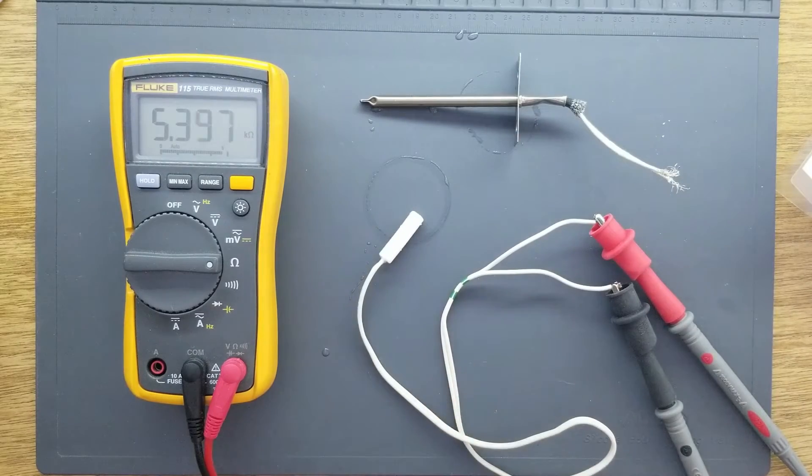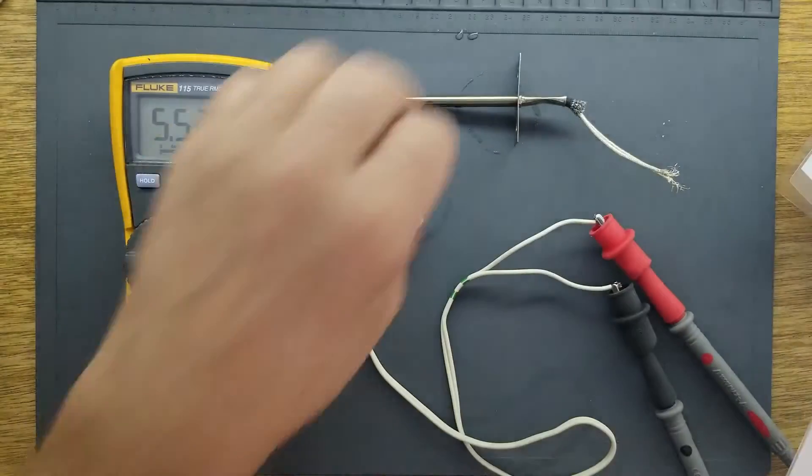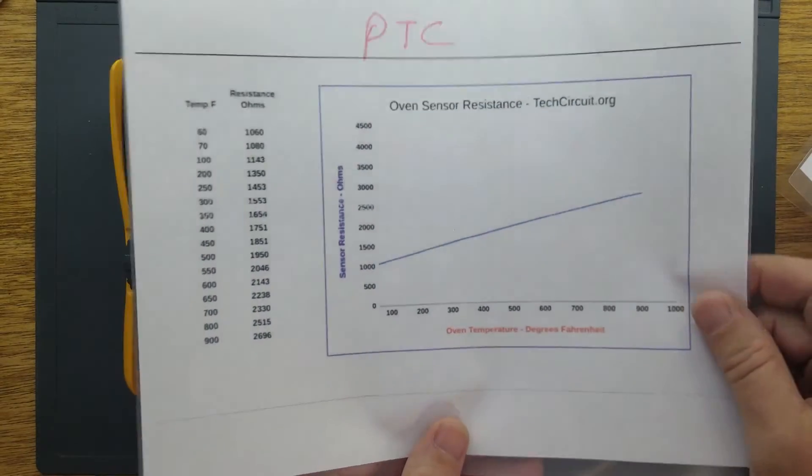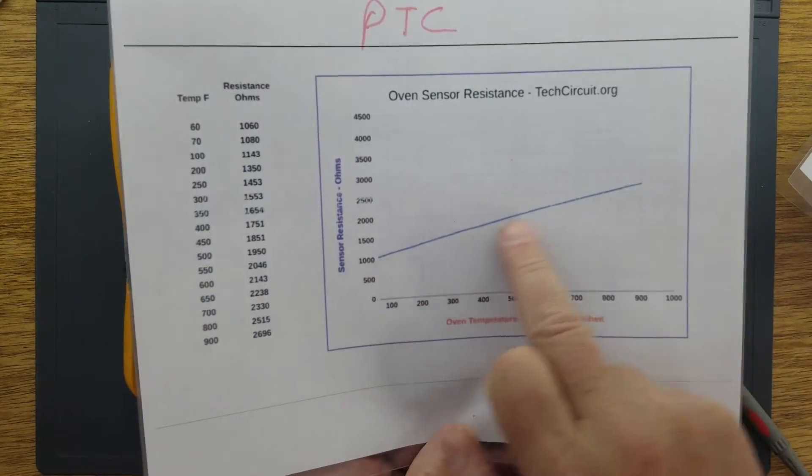Some thermistors, such as this oven sensor, have a fairly linear temperature versus resistance curve.